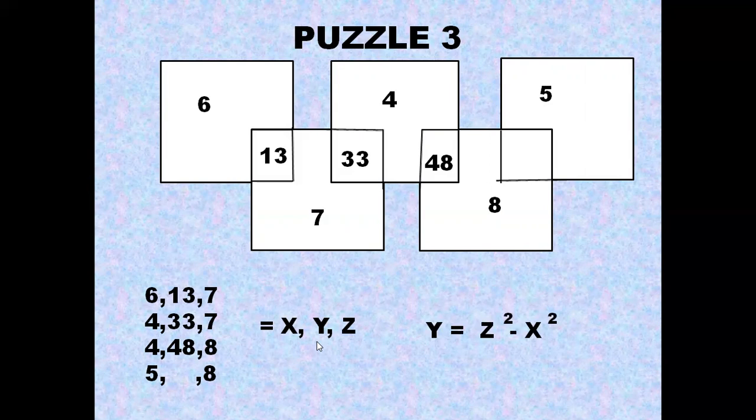Now let us proceed. If you do y = z² - x², you can find this. How so? Z is the right hand side and x is the left hand side, so 7² - 6² = 49 - 36, we get 13. Similarly here, 7² so z is 7, x is 4, so we find the middle numbers: 49 - 16 = 33. Similarly, 8² - 4² = 64 - 16 = 48. Similarly, in order to find this, what we do is 8² - 5² = 64 - 25 = 39. So this question mark is 39. This is how we solve Puzzle 3.